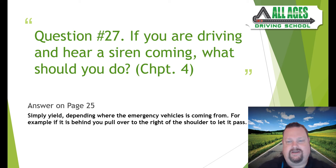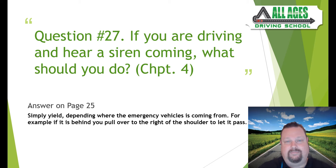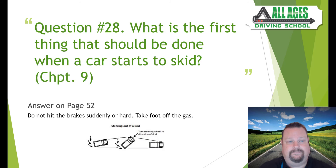Question number twenty-seven: if you are driving and hear a siren coming, what should you do? The simple answer is yield. Depending on where the emergency vehicle is coming from — if it's behind you, pull over to the right shoulder to let it pass. If you're at an intersection and your light turns green but you hear a siren approaching from another direction, stay where you are and let the emergency vehicle pass through the intersection safely.